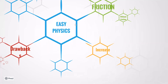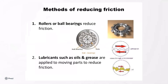In the same way, there are some methods to decrease friction. Rollers or ball bearings reduce friction, so in moving parts of machineries we can use ball bearings. Lubricants such as oils and grease are also applied to moving parts to reduce friction. And while you play caroms, you might have noticed that you apply powder on the board before you strike the coin — because the coin will move very smoothly if you apply powder on the carom board. That is also one way of reducing friction. There are many methods by which you can reduce friction.